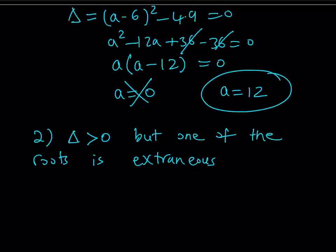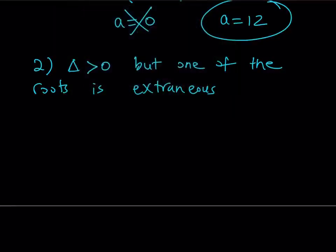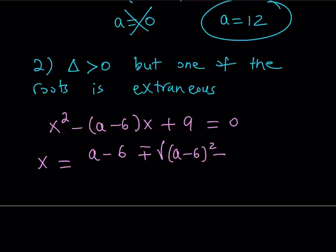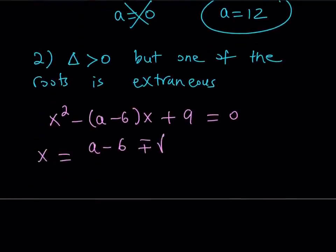With delta > 0, let's write the solutions using the quadratic formula. Our quadratic is x² − (a−6)x + 9 = 0. Applying the formula: x = [(a−6) ± √((a−6)² − 36)] / 2. Recall we already computed the discriminant: (a−6)² − 36 = a² − 12a. So the solutions are x = [(a−6) ± √(a²−12a)] / 2.